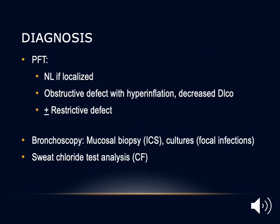Diagnostic evaluation for functional assessment includes pulmonary function testing. Bronchiectasis was once classified as an obstructive lung disease alongside chronic bronchitis and emphysema, but it has different pathology and clinical presentation. We still see obstructive defects on spirometry, increased lung volumes, hyperinflation, and decreased diffusion capacity. In localized bronchiectasis, PFT may be normal or show a restrictive defect.